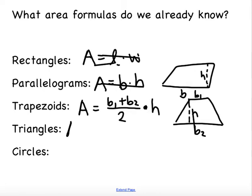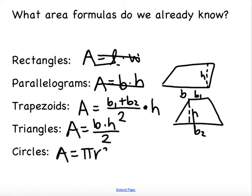Triangles have an area of base times height divided by 2. And circles have an area of pi r squared. All of these are going to come in handy as we do the surface area of cylinders and prisms.